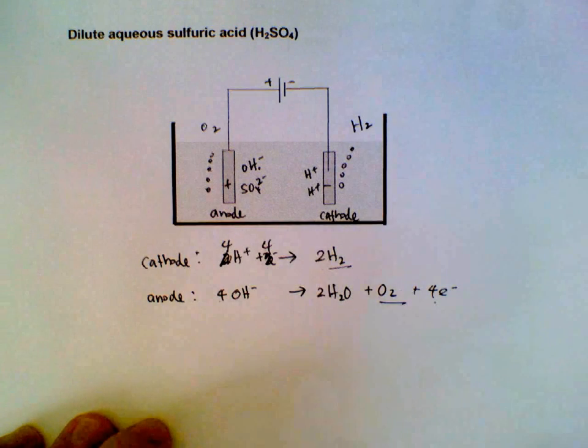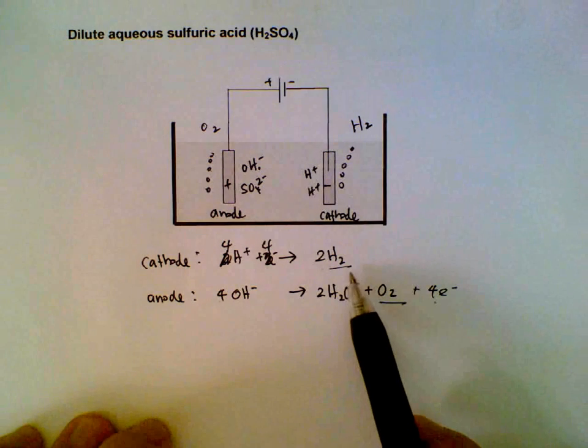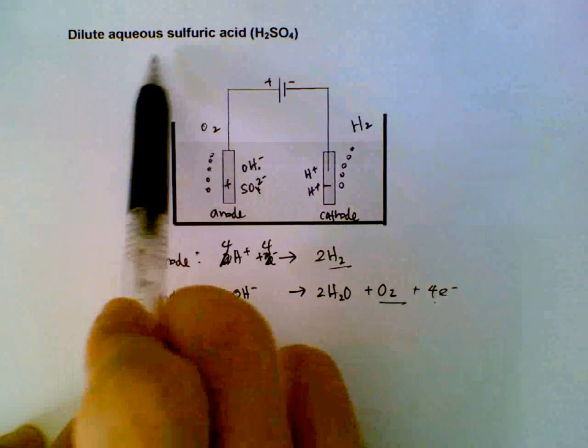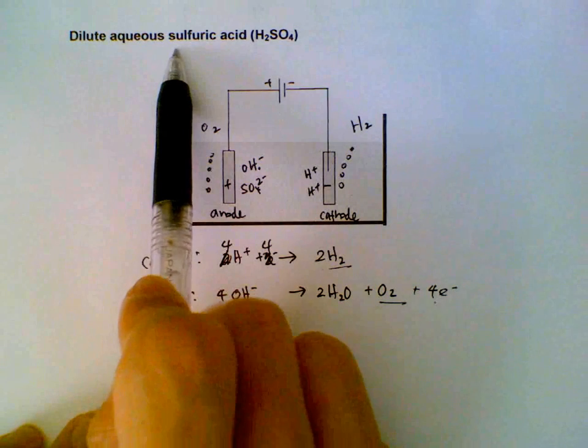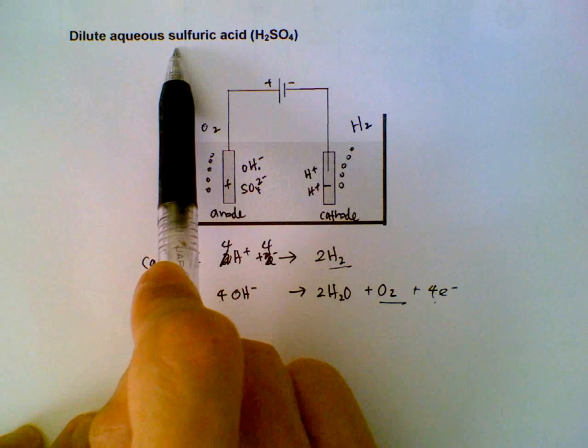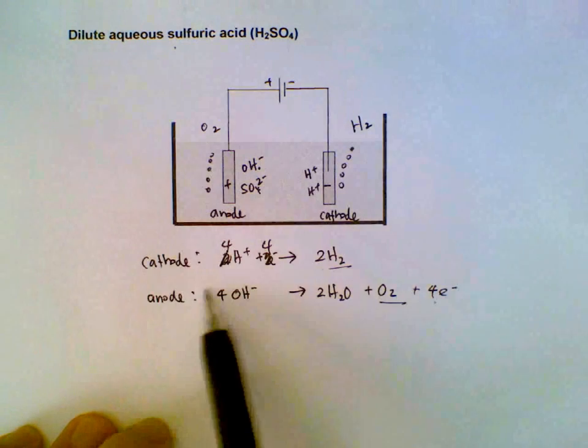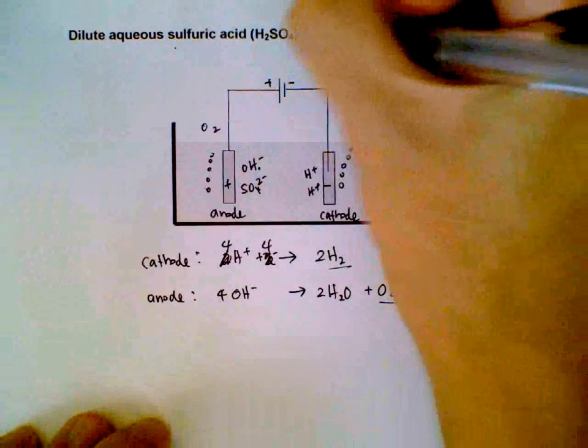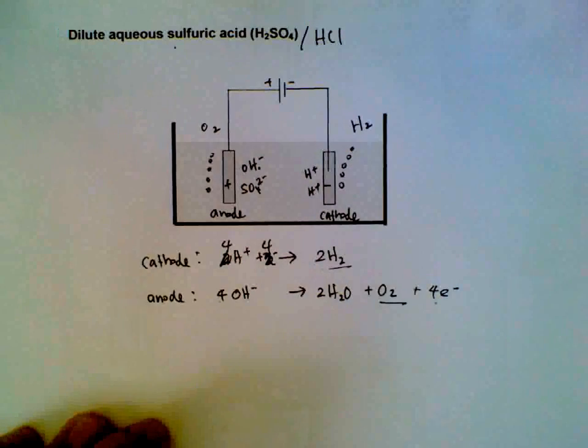You realize that this is actually the same as one of our earlier videos where we electrolyzed aqueous dilute sodium chloride. Now this is the electrolysis of aqueous dilute sulfuric acid. You will also get the same half equations if you were to use aqueous hydrochloric acid dilute or aqueous nitric acid dilute.